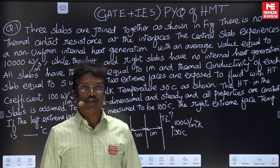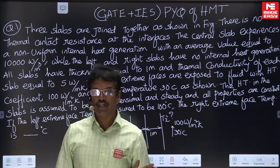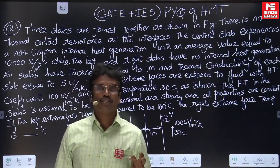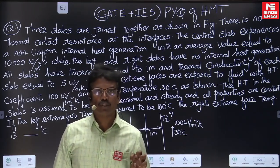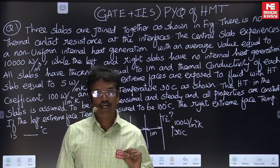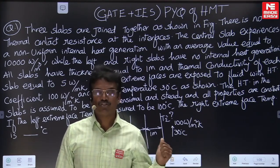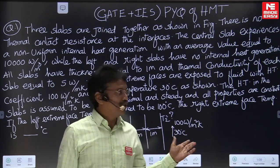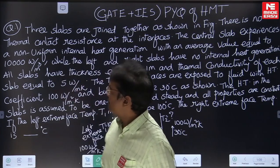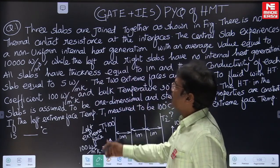As you are aware, in heat and mass transfer there are four topics: conduction, convection, radiation, and heat exchangers. I have selected some of the most typical questions from previous year GATE exams and discussed their solutions. Let me first start with the first question, which is given like this.